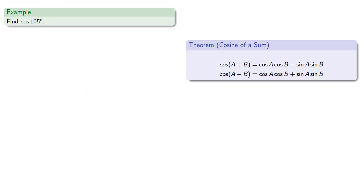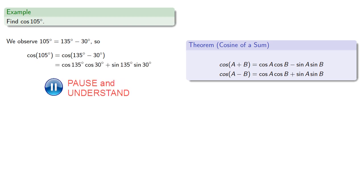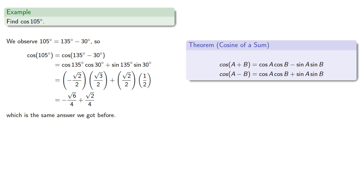So we might try 135 minus 30, and this time we do know the sine and cosine of both 135 and 30. So we can evaluate and simplify, and we get the same answers we got before, this time using a difference.